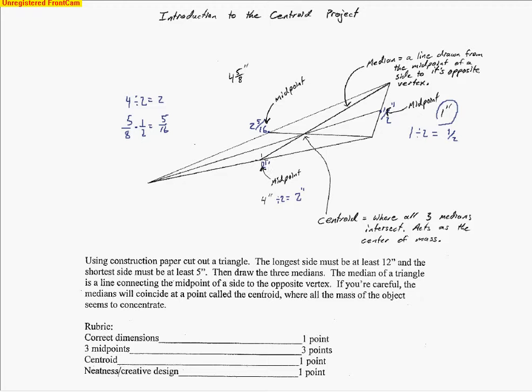Then I draw these medians. A median is a line drawn from the midpoint to the opposite vertex. I call this the opposite vertex because these two vertices, where these two lines come together, are in line with this midpoint. So I can't draw a line that is not on the side to those two vertices, but I can draw a line to the opposite vertex.